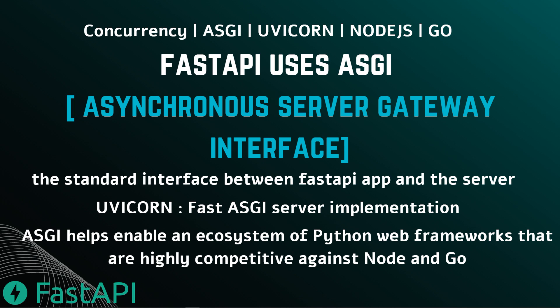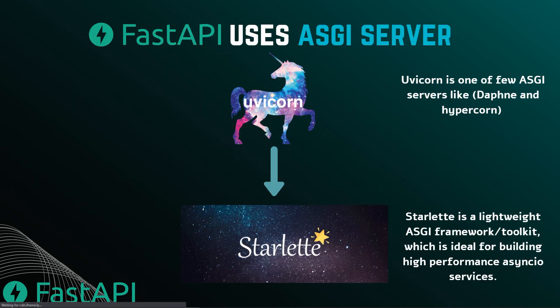UVicorn is the server implementation. It's not the only option — there are others like Daphne or Hypercorn — but the most popular and most compatible with FastAPI is UVicorn by far. ASGI helps an ecosystem of Python web frameworks that are highly competitive against Node and Go. FastAPI as a web framework uses an ASGI server, which in our case is UVicorn. UVicorn in turn uses something called Starlette, which is a lightweight ASGI framework or toolkit, very similar to Werkzeug in Flask. Starlette helps the server build high-performance async IO services.